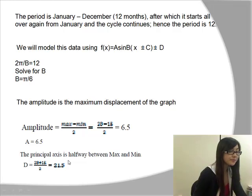The vertical shift, up and down, would be the principal axis halfway between the minimum and the maximum. So we have to find the average between the minimum and the maximum. That would be 28 plus 15 divided by 2, giving us 21.5.